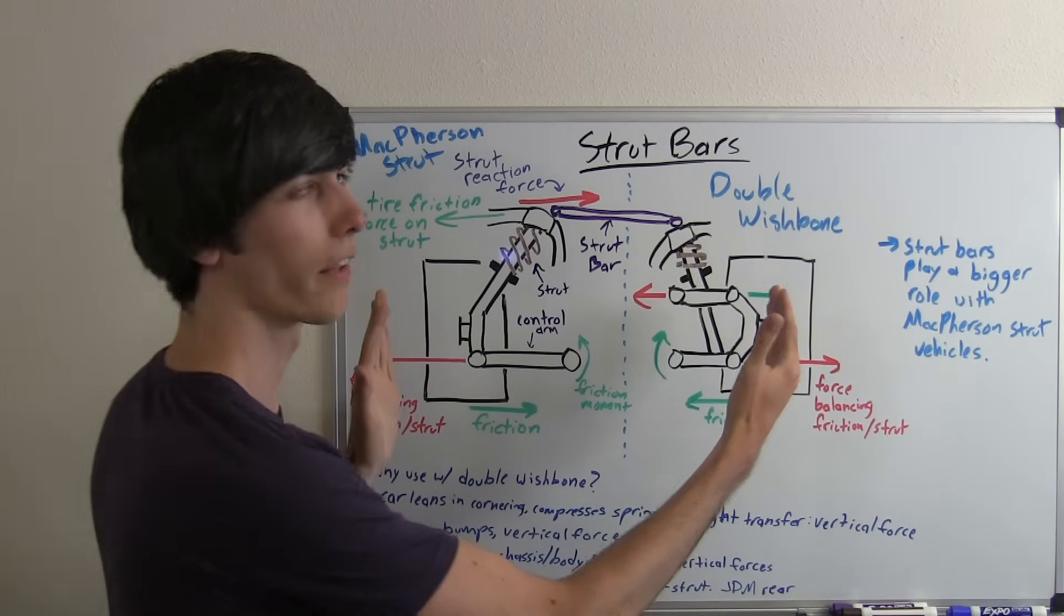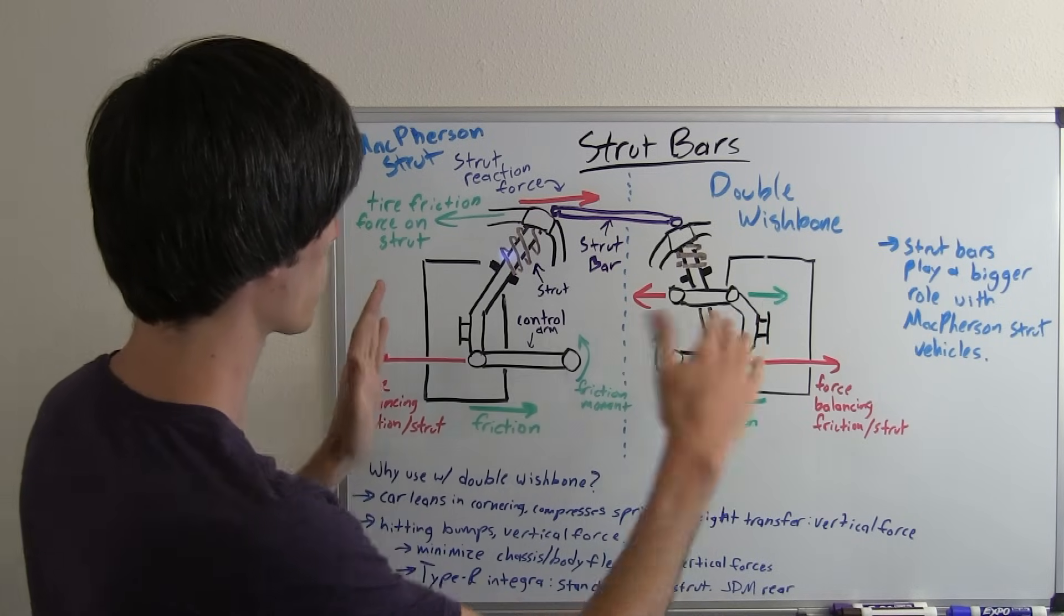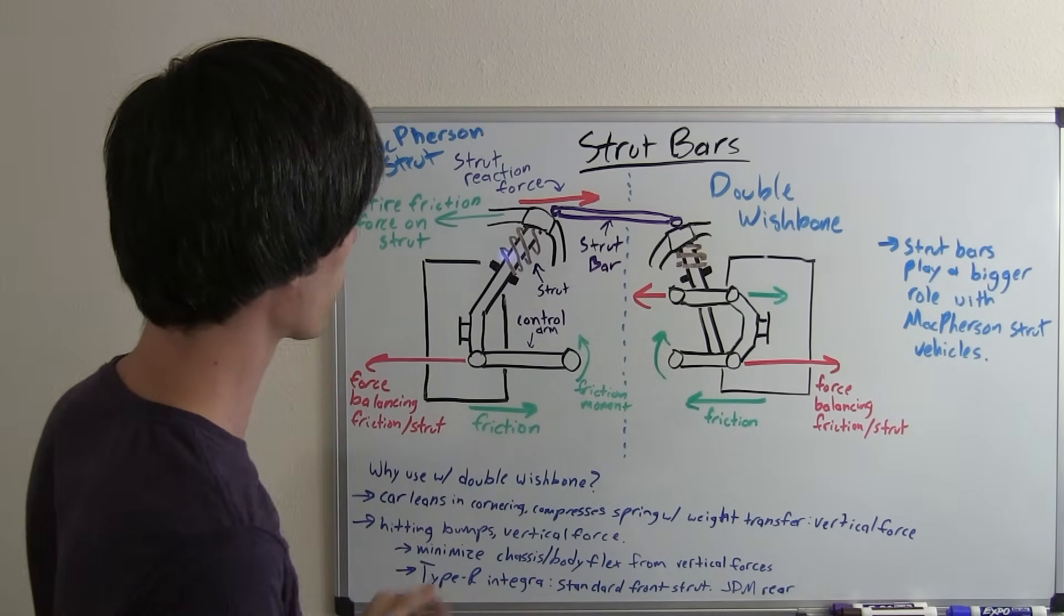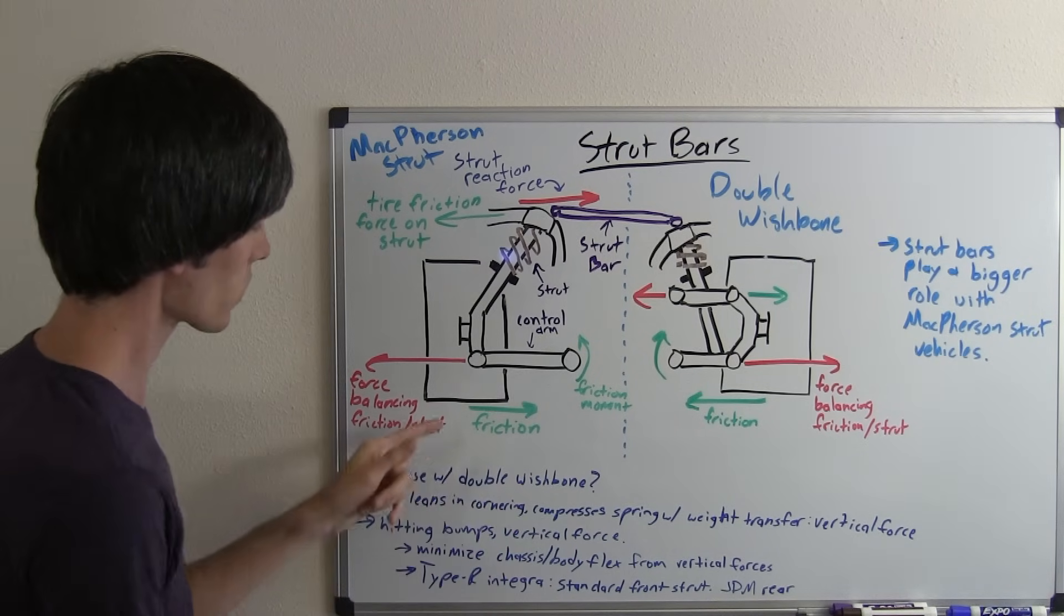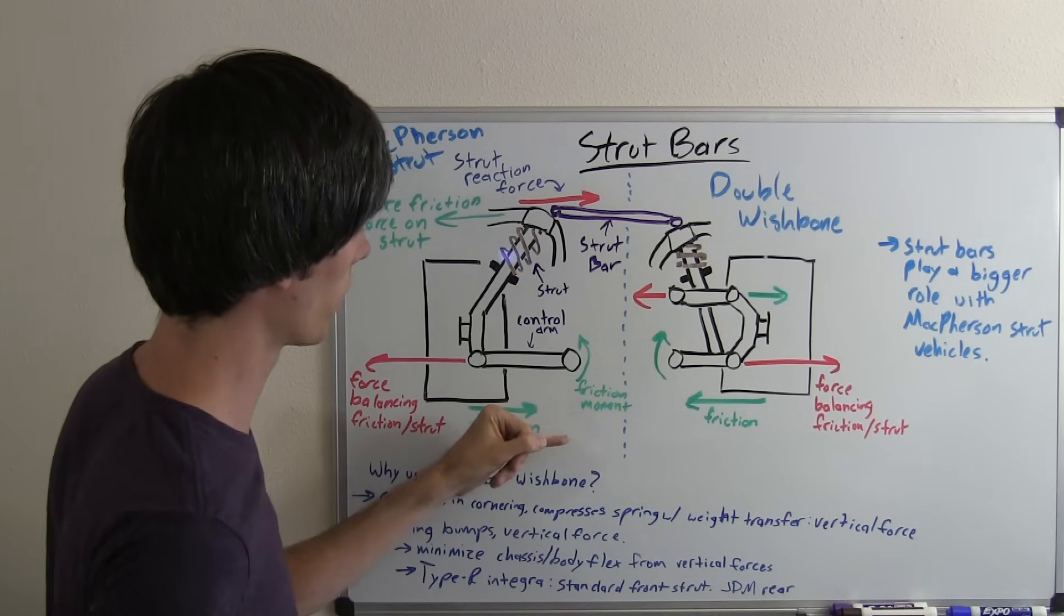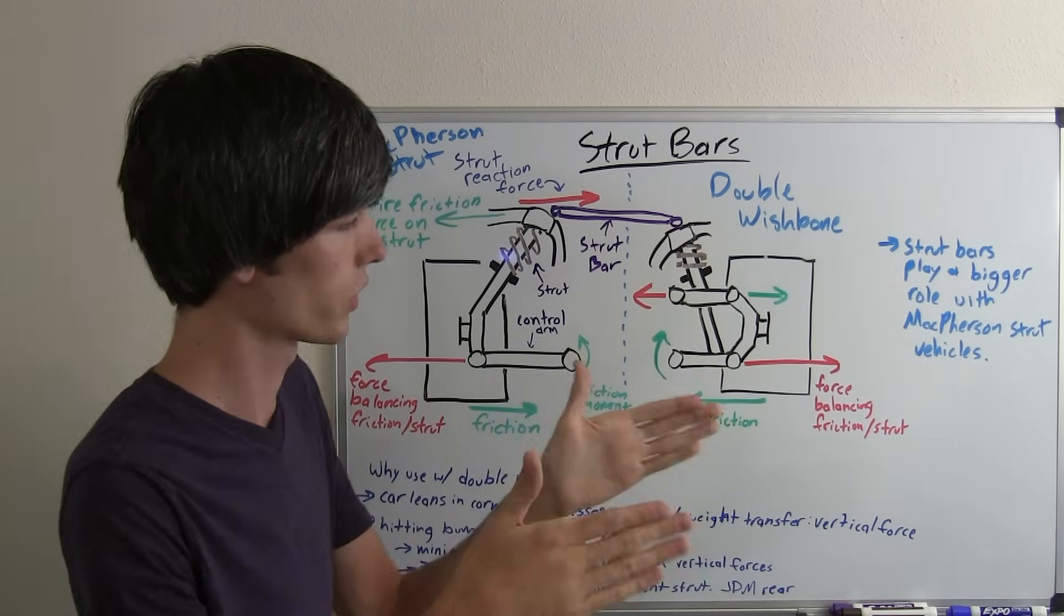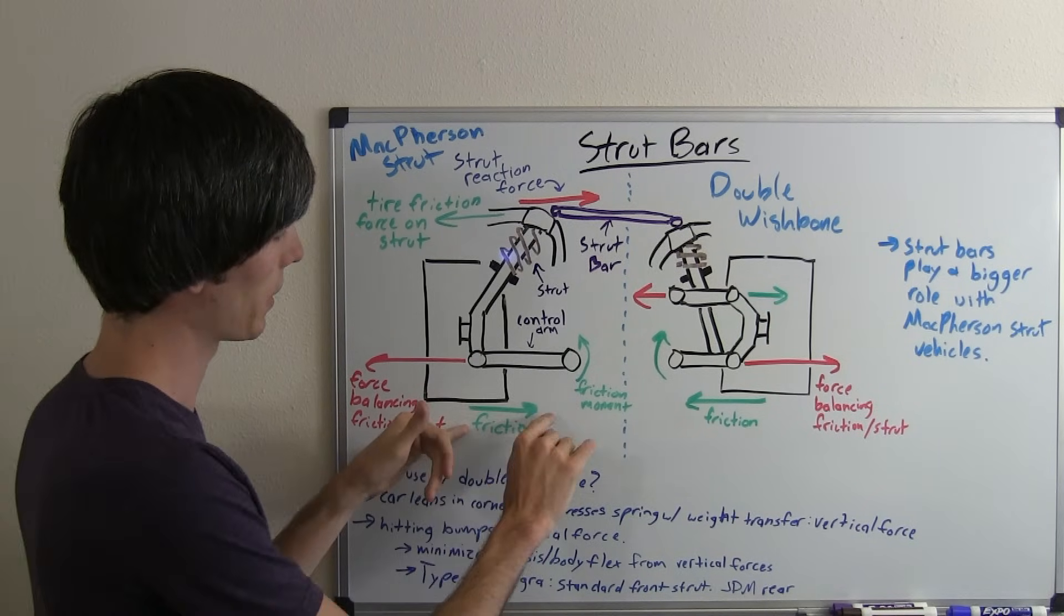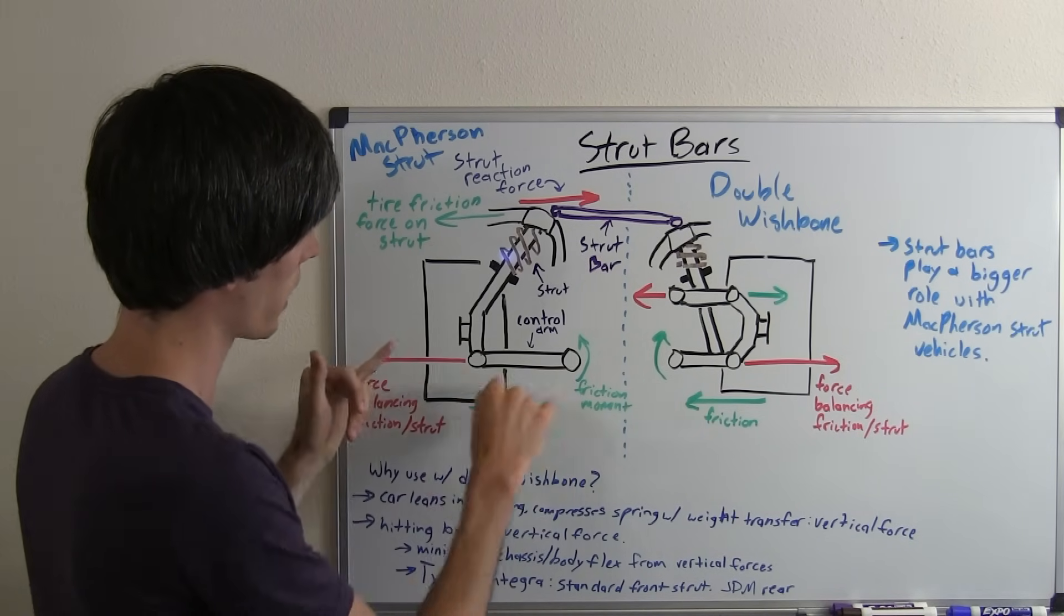First of all we're going to pretend that we're looking at the back of a car and it's going around a corner. We'll say it's taking a hard right corner. What's going to happen is the car is going to want to go to the left but friction is going to push the car and allow it to maintain that corner and not slide. This is your friction force here coming in from the road and here's your tire.